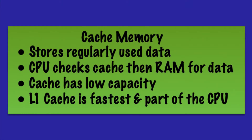CPUs also contain cache memory. Cache is a type of high-speed memory which is built into the processor, and it is typically used to store copies of frequently used data or instructions. Cache memory can be characterized as having fast read/write speeds yet relatively low capacity.